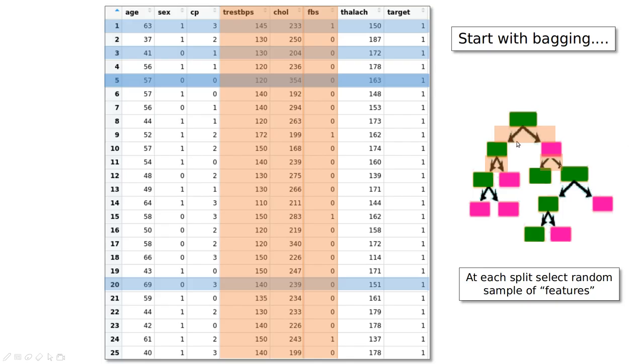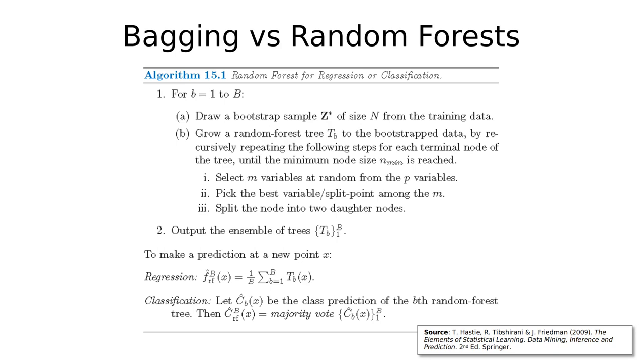We end up with random trees with random data. This sounds absolutely crazy, but this is called a random forest.